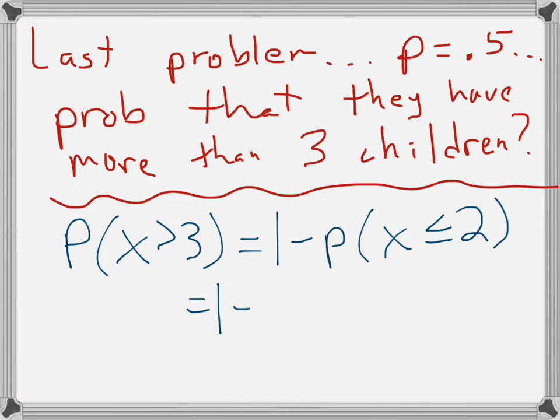Which is one minus, and the probability that X is less than or equal to two on your calculator is geometric CDF. Remember what I said? If it's less than or equal to, you use CDF. CDF stands for cumulative, and if something's cumulative, it takes care of all of your old data and averages that in as well. It takes that into account.